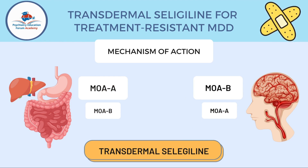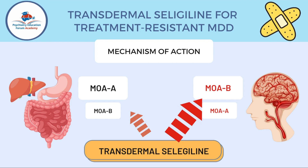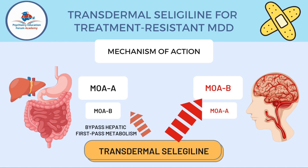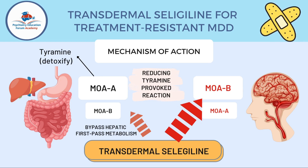With transdermal selegiline, it mainly goes through the brain, bypassing the GI tract and liver — so first-pass metabolism is bypassed. It acts more on MAO-B, but MAO-A in the brain is also blocked. Crucially, tyramine is still being detoxified by MAO in the gut, which reduces the risk of the tyramine-provoked reaction. This is why transdermal selegiline is a good monoamine oxidase inhibitor option.